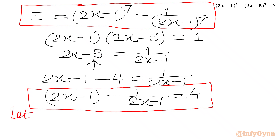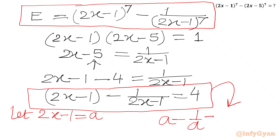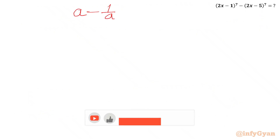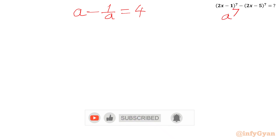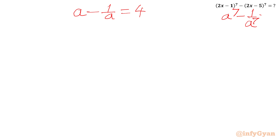Let a = 2x − 1. Then our equation becomes a − 1/a = 4, and the required expression becomes a⁷ − 1/a⁷. So our target is to find a⁷ − 1/a⁷ given that a − 1/a = 4.